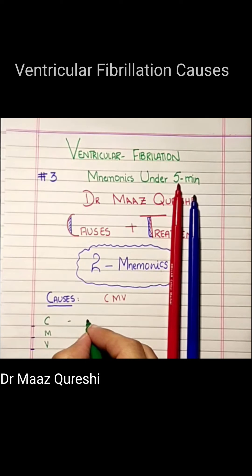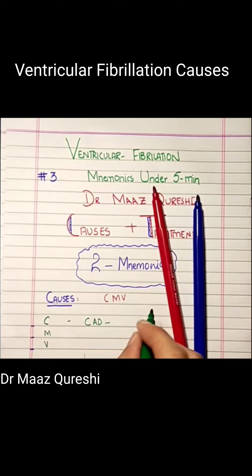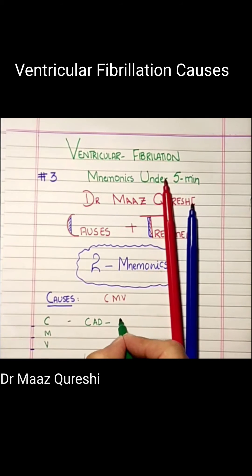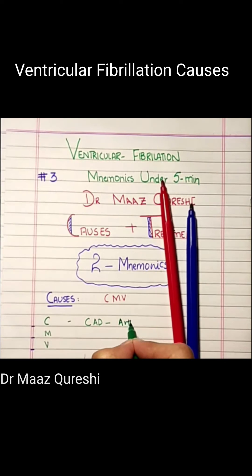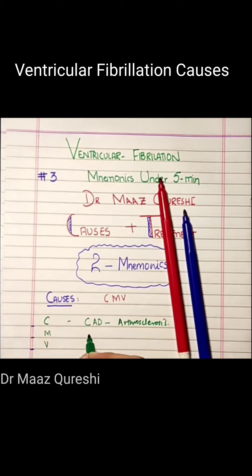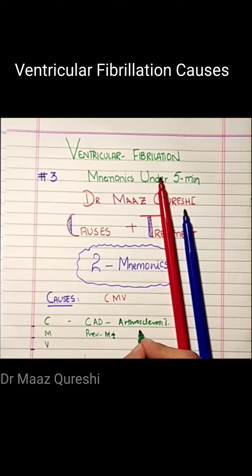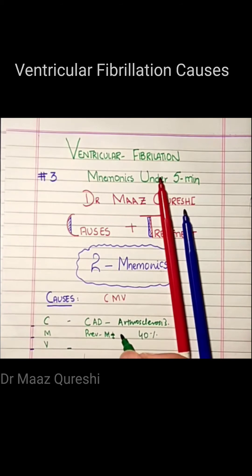C is basically coronary artery disease, which is caused by atherosclerosis — there is sclerosis in your vessels. Next is M, which is previous MI. If you have a previous MI, you are at risk of ventricular fibrillation, and it accounts for 40% of cases.